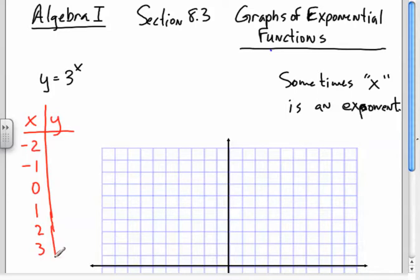Now, if I plug in negative 2, I'm going to get y is equal 3 to the negative 2. So that means that y is equal to 1 over 3 squared, which means that y is equal to 1 over 9, OK? So 1 ninth.